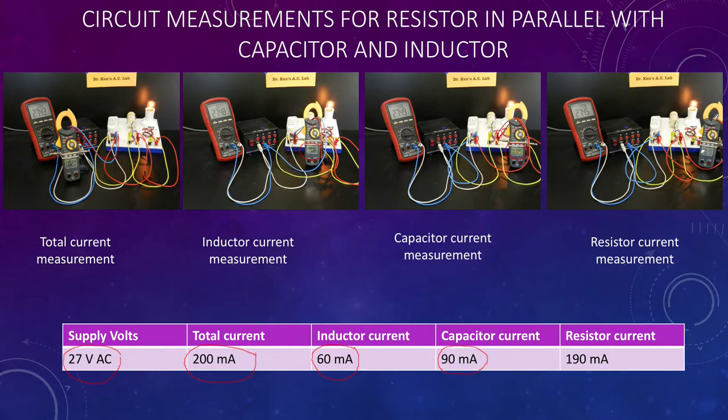Our final branch is the resistor. It comes up and through, and you can see there it's got 190 milliamps running through the resistor.